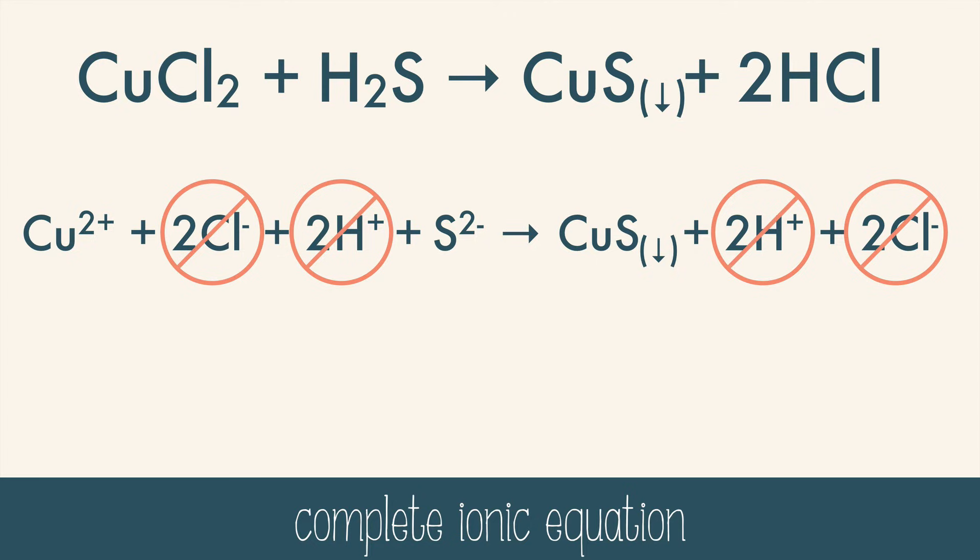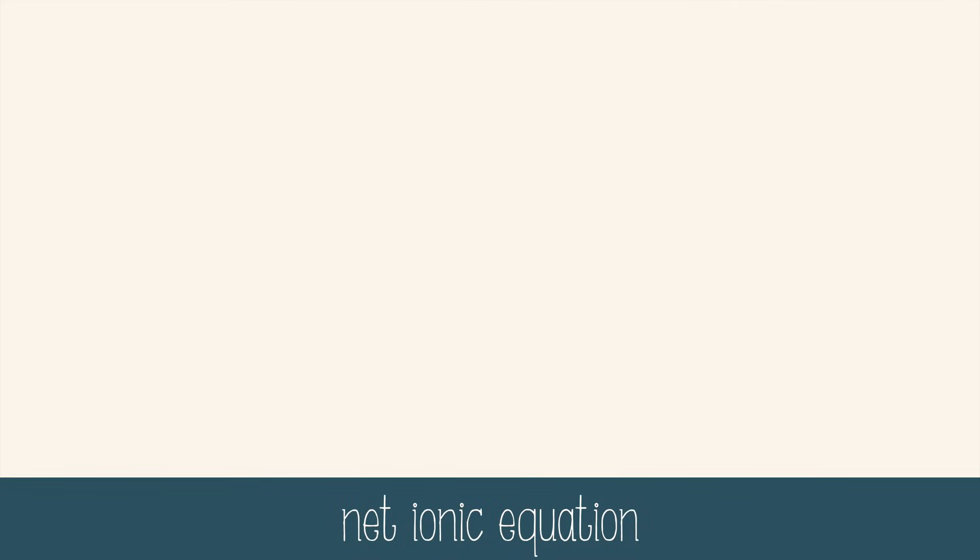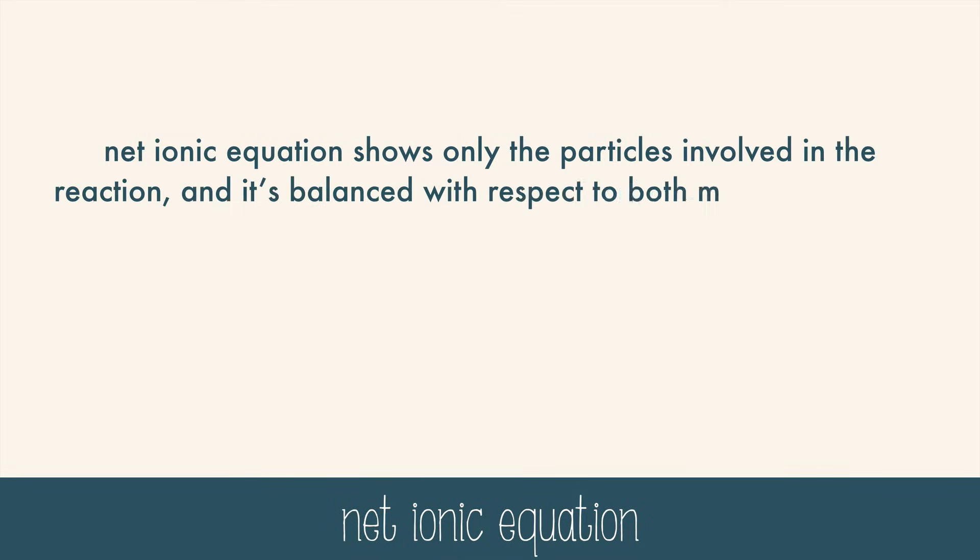If we cross them out, we can clean up the equation, and we get a net ionic equation. The net ionic equation shows only the particles that are involved in the reaction, and it's balanced with respect to both mass and charge. So here we have one copper atom and one sulfur atom on both sides of the equation, and the 2+ and 2- charges add up to zero, and there's zero on the other side of the equation. So this is a balanced net ionic equation.